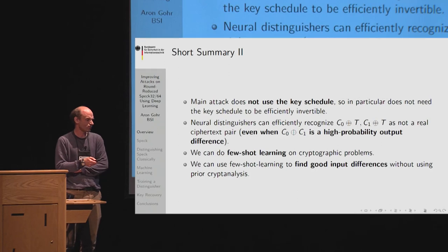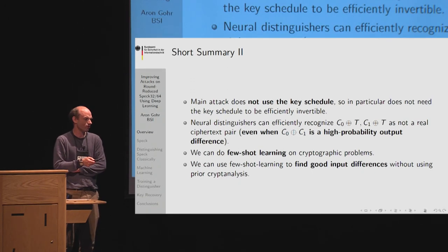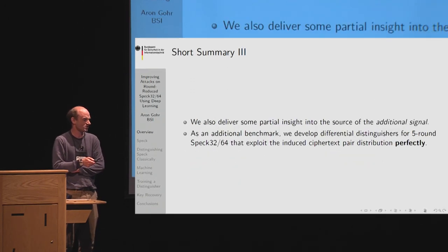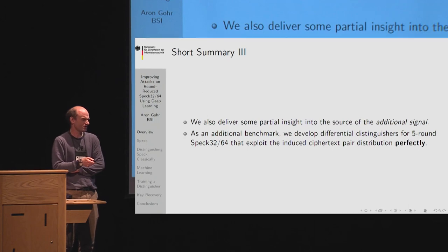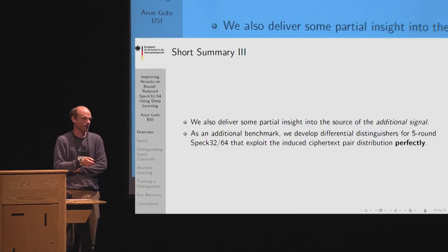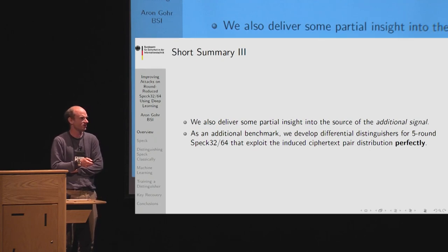We can also use the few-shot learning capability to find good input differences without prior cryptanalysis. Finally, in the paper we deliver some partial insight into the source of the additional signal — showing that the neural networks have an internal data representation that groups the output ciphertext pairs into a more fine-grained system of equivalence classes than the difference equivalence classes.